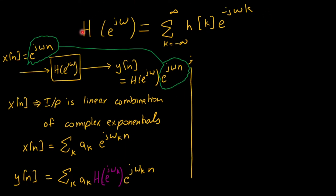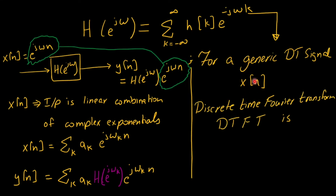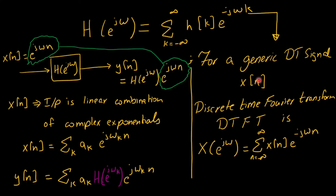For a generic discrete time signal x of n with impulse response h of k, replacing h of n with a generic signal x of n leads to the Discrete Time Fourier Transform. The DTFT synthesis expression is the summation from n equals minus infinity to infinity of x of n times e to the power minus j omega n, yielding x of e j omega on the left hand side.